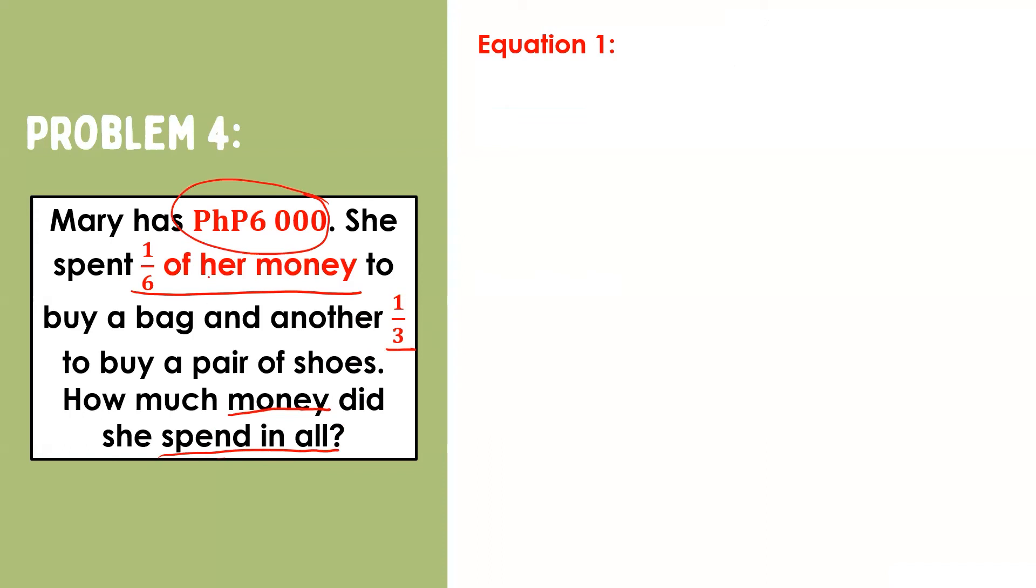We may start our solution by adding first one-sixth and one-third. This will help us know the total fraction of her money used to buy the bag and the pair of shoes.